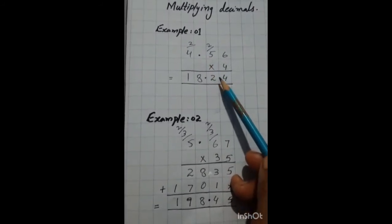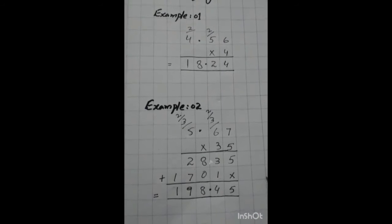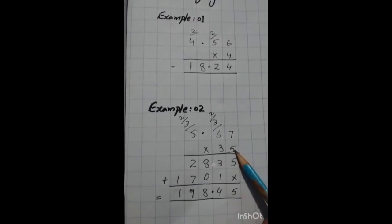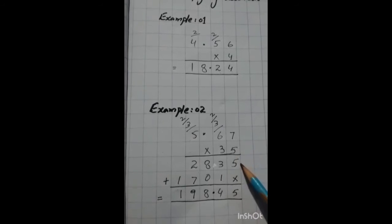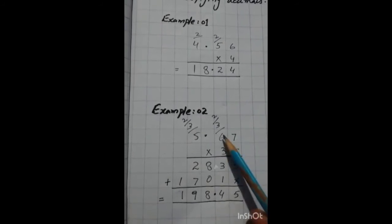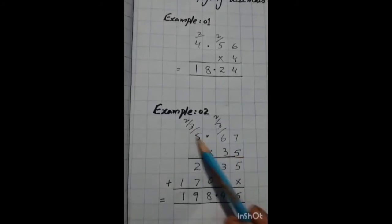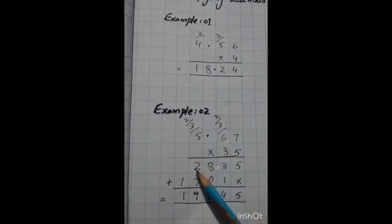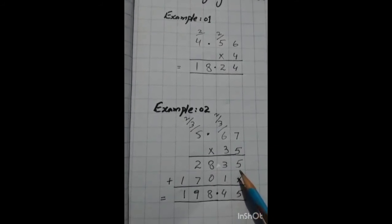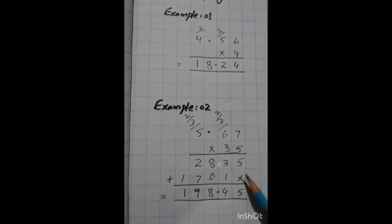Since the question is a hundredths number, the answer should also be a hundredths number — meaning two digits after the decimal. Example number 2: 5.67 multiplied by 35. It's a double multiplication. First we read the table of 5: 7 times 5 is 35, write 5 and carry 3. Then 6 times 5 is 30 plus 3 is 33, write 3 and carry 3. Then 5 times 5 is 25 plus 3 is 28. Write a zero as a placeholder since we now multiply by the tens digit.